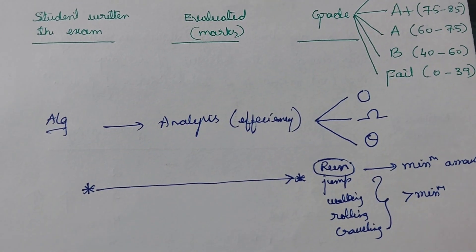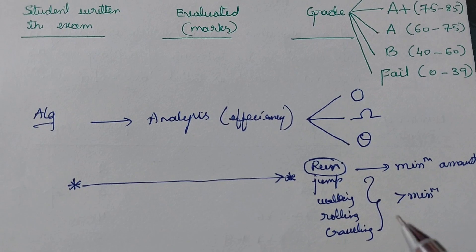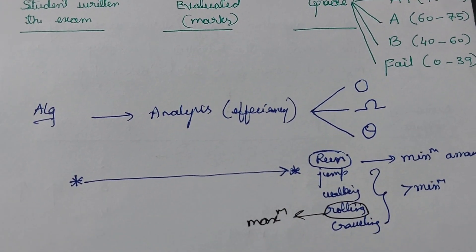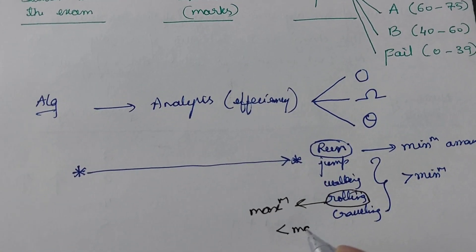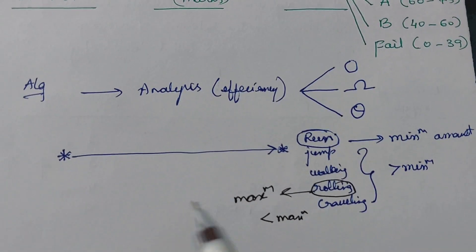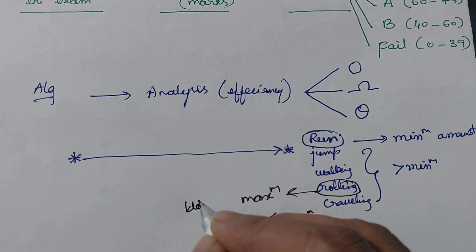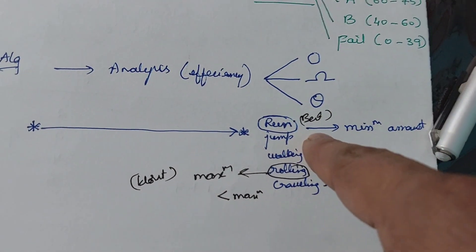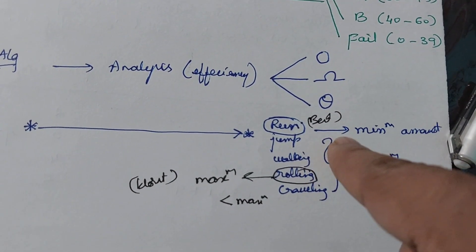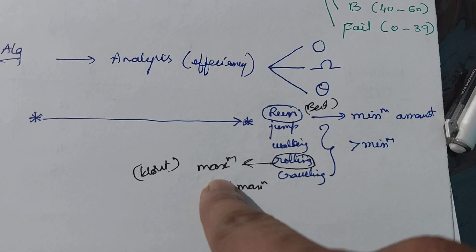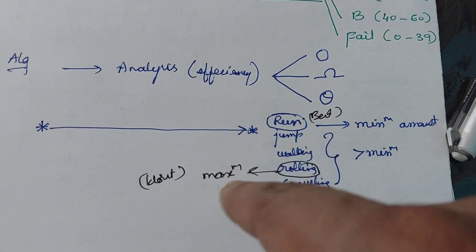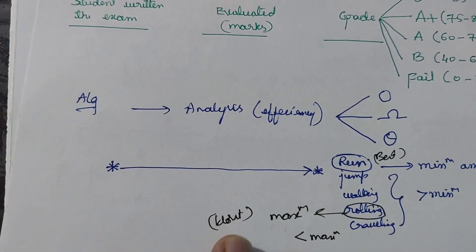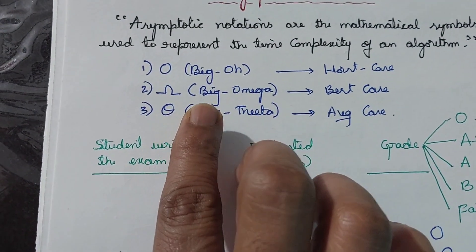Rolling takes the maximum time — that is the slowest. Moving from one location to another through rolling is the worst case, and through running is the best case. Whichever other method we use, it takes more than the best one and less than the worst one. With this example, we will now discuss Big O, Big Omega, and Big Theta individually.